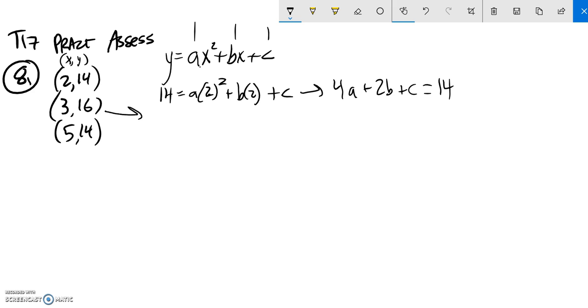And then this one, when Y is 16, X is 3. So 16 would equal A times X squared, X is 3, plus B times 3 plus C. So 3 squared is 9. So this would be 9A plus 3B plus C equals 16.